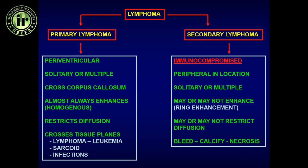Primary lymphoma is one of those entities that crosses the midline. The classic three entities that cross the midline are glioblastoma multiforme (GBM), lymphoma, and demyelinating disease — although metastasis and infection are also potential entities. But the classic three are GBM, lymphoma, and demyelinating diseases.